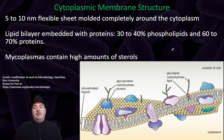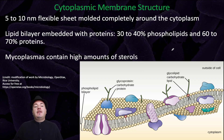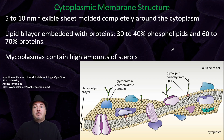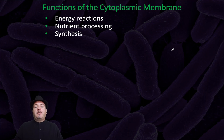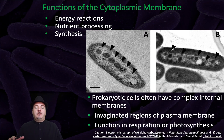The cytoplasmic membrane is a 5 to 10 nanometer flexible sheet molded completely around the cytoplasm. It's a phospholipid bilayer embedded with proteins — 30 to 40% phospholipids and 60 to 70% proteins. Mycoplasmas, in contrast, have a high amount of sterols embedded in this membrane to prevent them from lysing open, whereas gram-negative and gram-positive bacteria have cell walls to serve that function. The functions of the cytoplasmic membrane include performing energy reactions, nutrient processing, and synthesis.